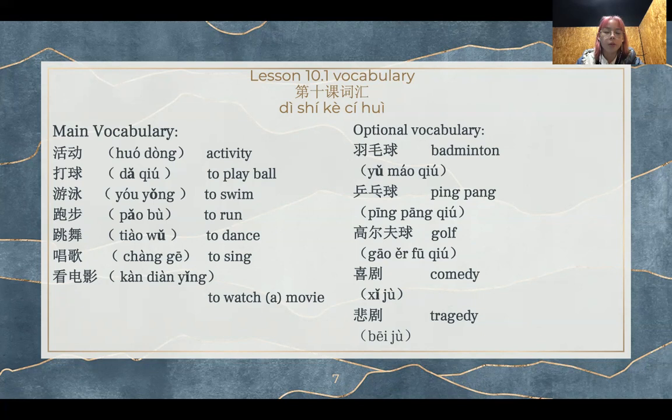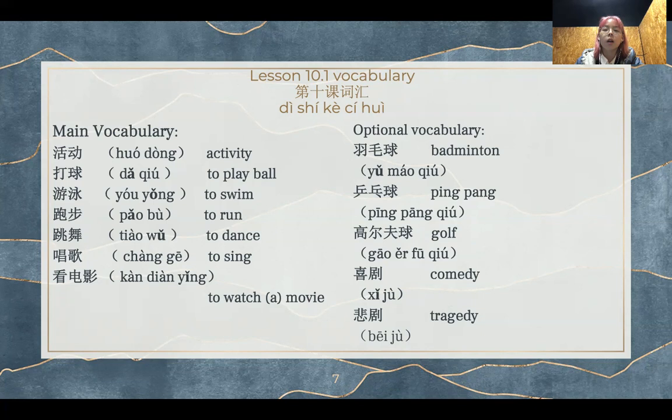游泳，to swim. 跑步，to run. 跳舞，to dance. 唱歌，to sing. 看电影，to watch a movie. Normally there's a measure word for 电影: 一部电影。Here are also some optional vocabulary: 羽毛球，badminton. 乒乓球，ping pong. 高尔夫球，golf. 喜剧，comedy. 悲剧，tragedy.